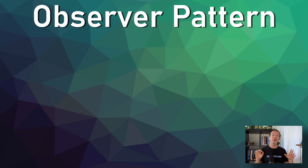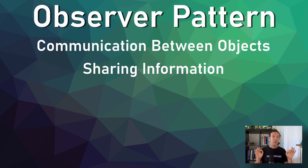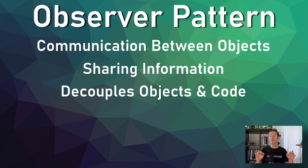The Observer Pattern is one of my all-time favorites. I use it all the time. Now, it's not always the easiest to wrap your head around, but it is one of the simpler programming patterns to implement with Unity and C#. The Observer Pattern is all about communicating between objects, sharing information, and doing so in a way that decouples the object sharing the information from the object that might need or make use of that information.